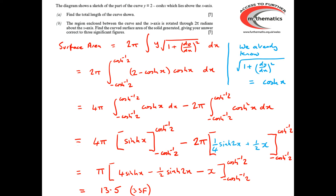Looking at the mark scheme for part a: one mark for finding the limits of the curve — realising the limits were cosh⁻¹(2) and −cosh⁻¹(2). Then two marks for finding dy/dx and working out that the square root of 1 + (dy/dx)² reduced to cosh x. Two further marks for using that inside the arc length formula, and two final marks for correctly evaluating the integral — seven marks altogether for part a.